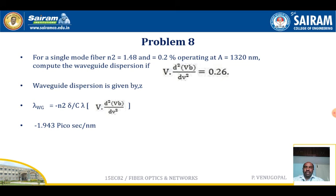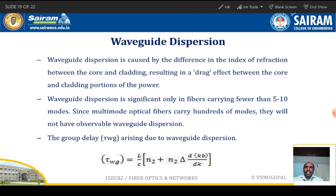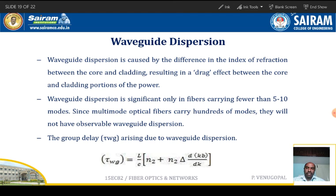To summarize the important points: waveguide dispersion is caused by the difference in the index of refraction between the core and cladding, resulting in a drag effect. It is significant only in fibers carrying fewer than 5 to 10 modes, while multimode fibers carrying hundreds of modes will not have observable waveguide dispersion. The group delay expression is: tau_g = (L/c) × [n₂ + n₂ × delta × d(kb)/dk], where b is the normalized propagation constant.